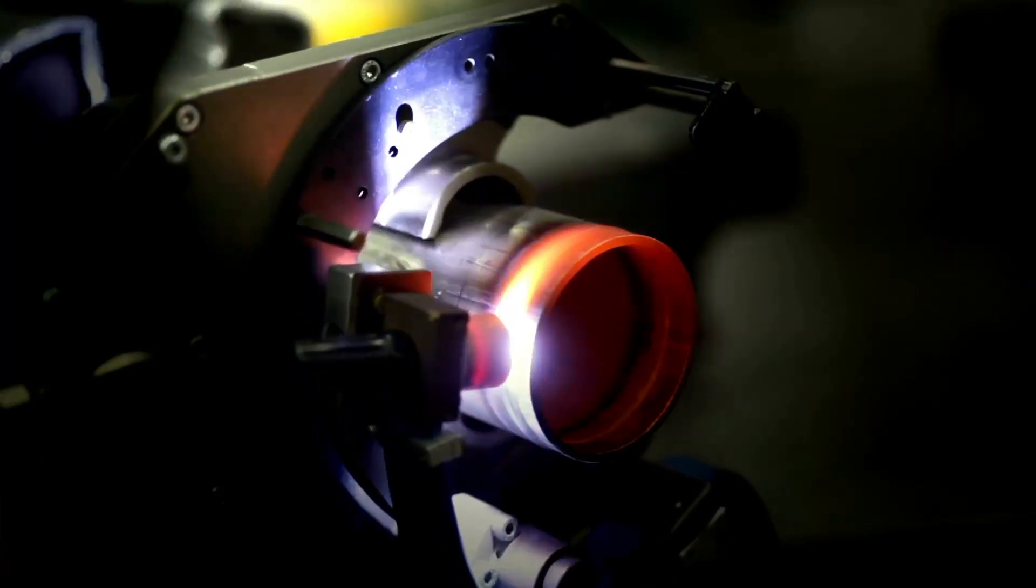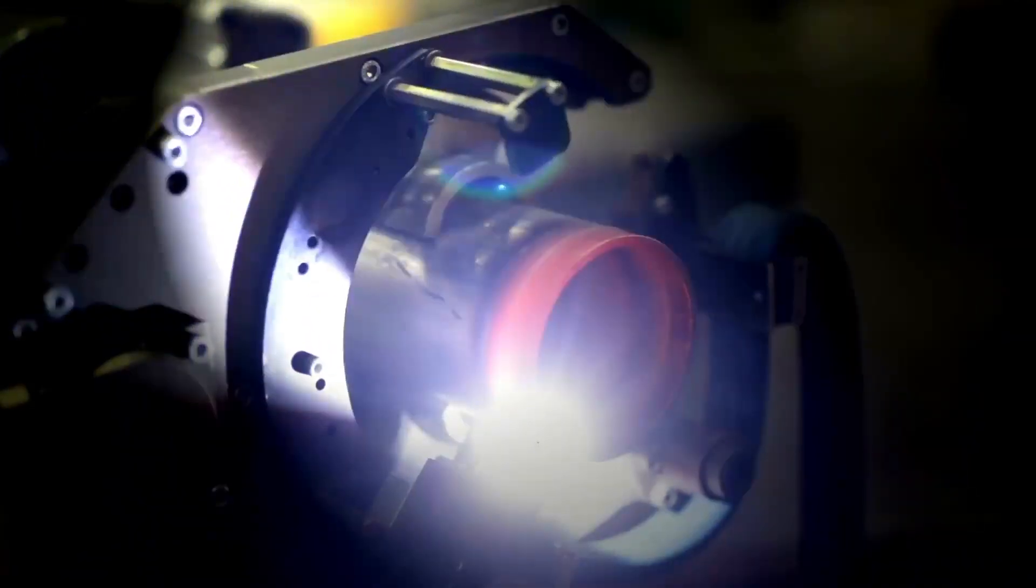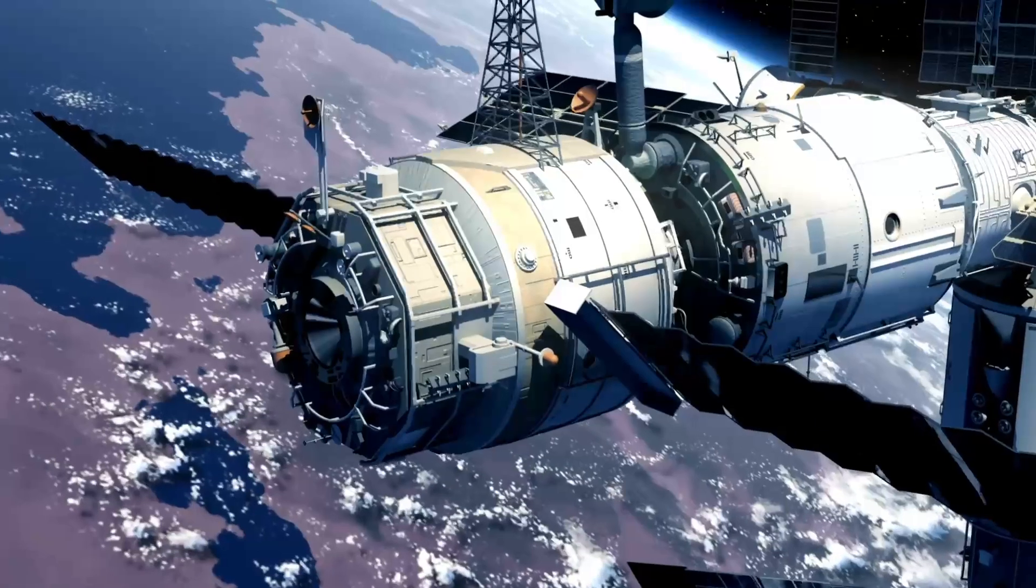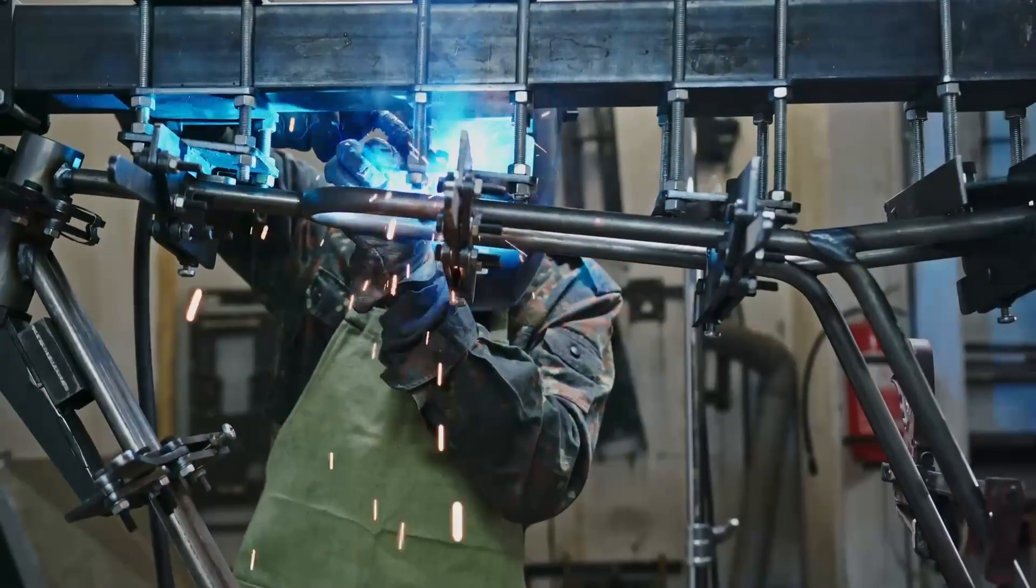On tubes or pipes, orbital welding can be done as a fusion process or with the inclusion of filler material. The aerospace industry created orbital welding in the 1950s to replace compression fittings and hand welding.